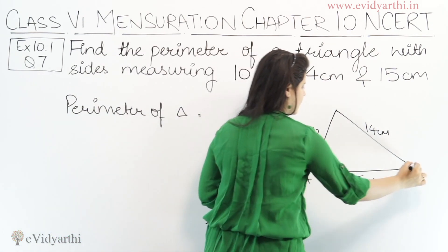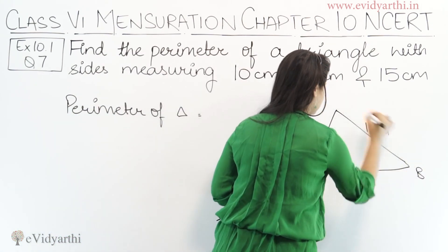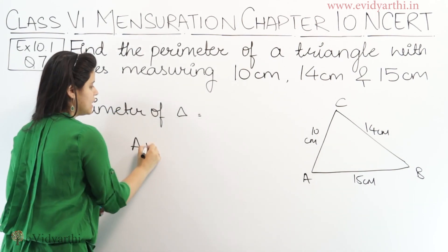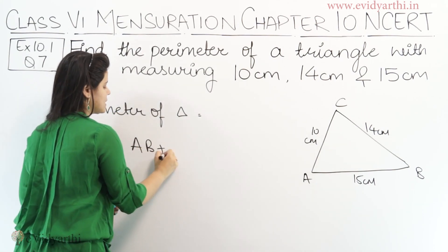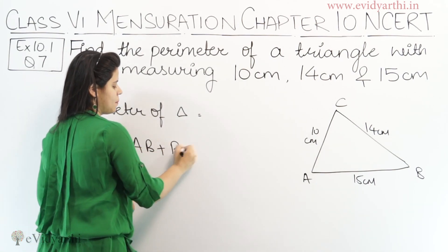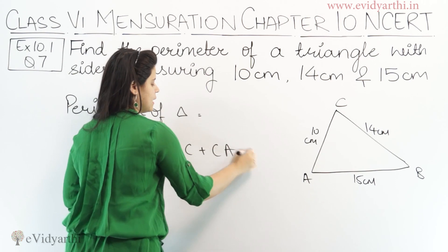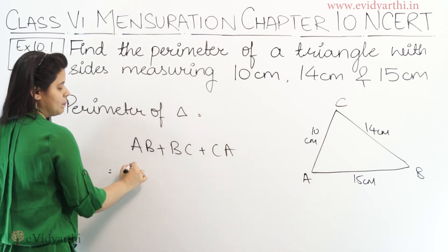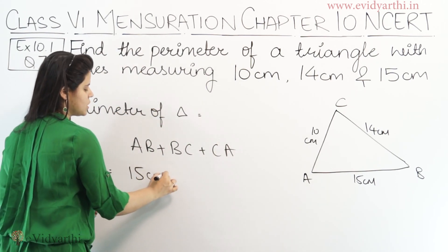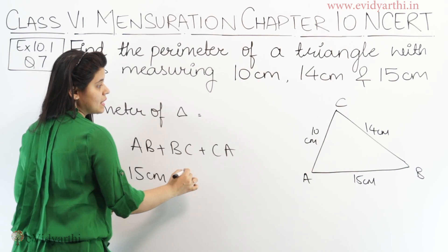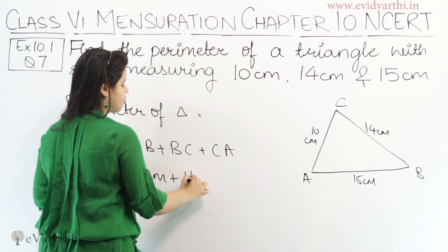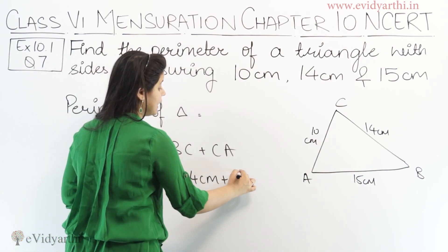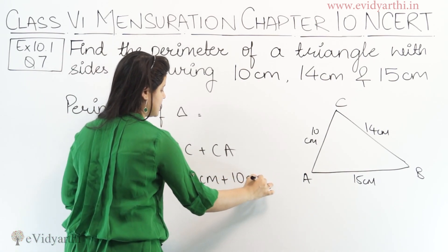So let's name it triangle ABC. This means AB plus BC plus CA. AB is 15 cm, plus BC is 14 cm, plus CA is 10 cm.